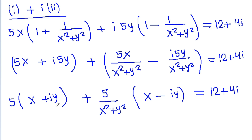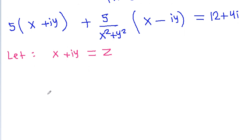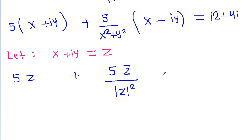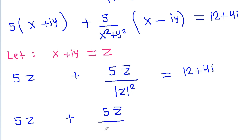Now x plus iota·y is a complex number. If we assume x plus iota·y equals g, then x minus iota·y will become the conjugate of g, written as g-conjugate. And x² plus y² will become mod(g)², giving us 5g plus 5·(g-conjugate) divided by mod(g)² equals 12 plus 4·iota. Since g times g-conjugate equals mod(g)², we get 5g plus 5·g-conjugate divided by (g times g-conjugate) equals 12 plus 4·iota.